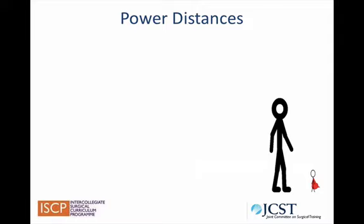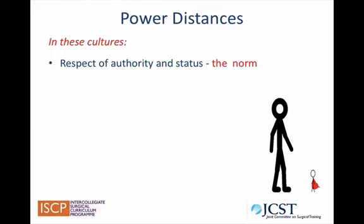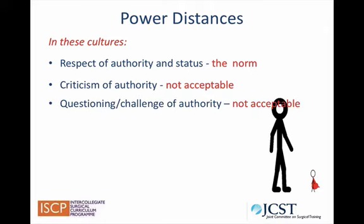All cultures have differing power distances. Power distance indicates the social distance between someone in a high-status position and someone in a low-status position. High-power distance cultures indicate that the social distances between those in differing status positions are great. High-power cultures include many Asian, Oriental or East Asian and African cultures. In these cultures, there is unquestioned respect for authority and status — it's the norm.